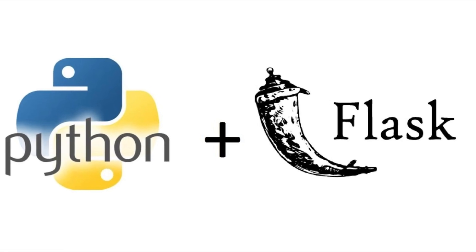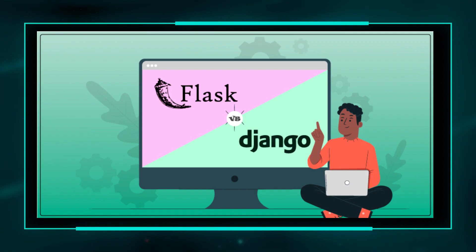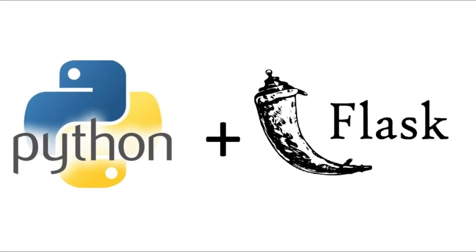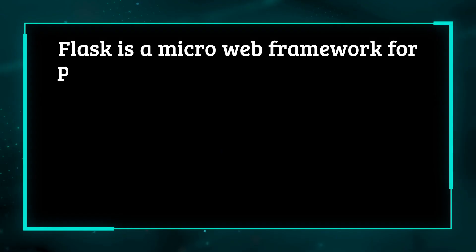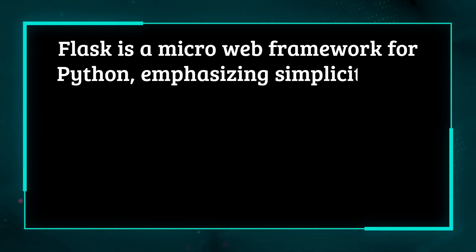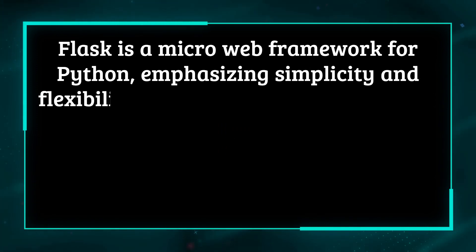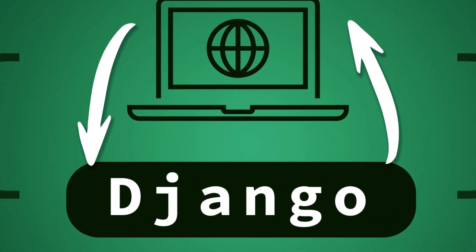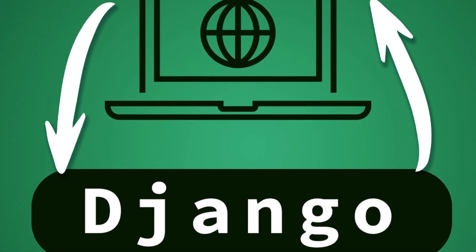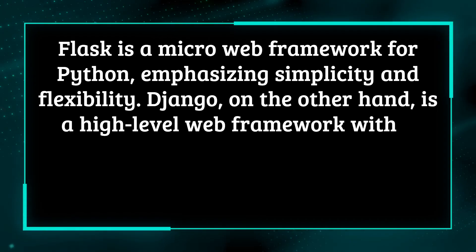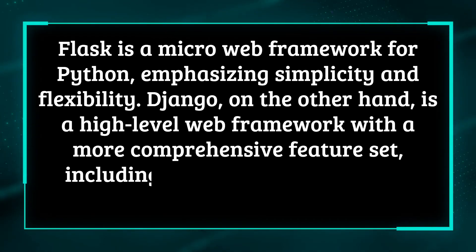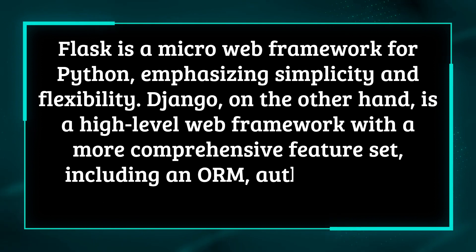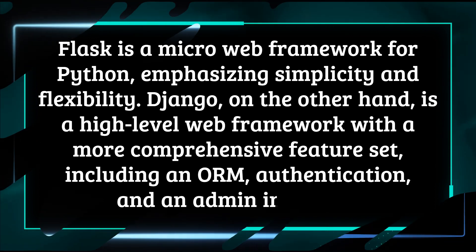Question 1: What is Flask and how does it differ from Django? Flask is a micro web framework for Python, emphasizing simplicity and flexibility. Django, on the other hand, is a high-level web framework with a more comprehensive feature set, including an ORM, authentication, and an admin interface.